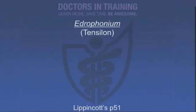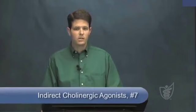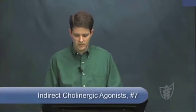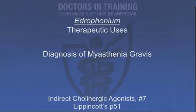Our next drug is edrophonium — another cholinesterase inhibitor similar to neostigmine, but with a much shorter duration of action: only 10 to 20 minutes. It is used in the diagnosis of myasthenia gravis. If you give too much edrophonium, you can cause cholinergic crisis — way too much cholinergic effect, making the patient leaky everywhere. You can treat overdose of edrophonium with atropine, a cholinergic antagonist, which will be covered in the next lecture.